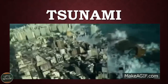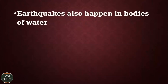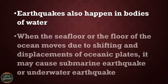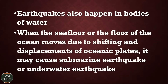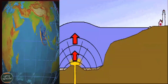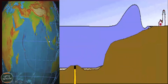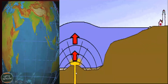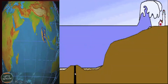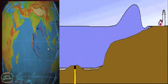Now we're done with the focus and the epicenter. What about the tsunami? Earthquakes also happen in bodies of water, not only on the ground or continents, but also in the ocean. When the seafloor moves due to the shifting and displacement of oceanic plates, it may cause a submarine earthquake, or underwater earthquake. As the ground moves, it pushes the water up and moves it towards the continent.